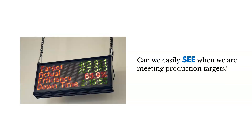Here's an example. Can we easily see when we are meeting production targets? This is a simple example of a production dashboard where we're tracking throughput and whether we're meeting our targets. We can easily see whether the goals have been met.